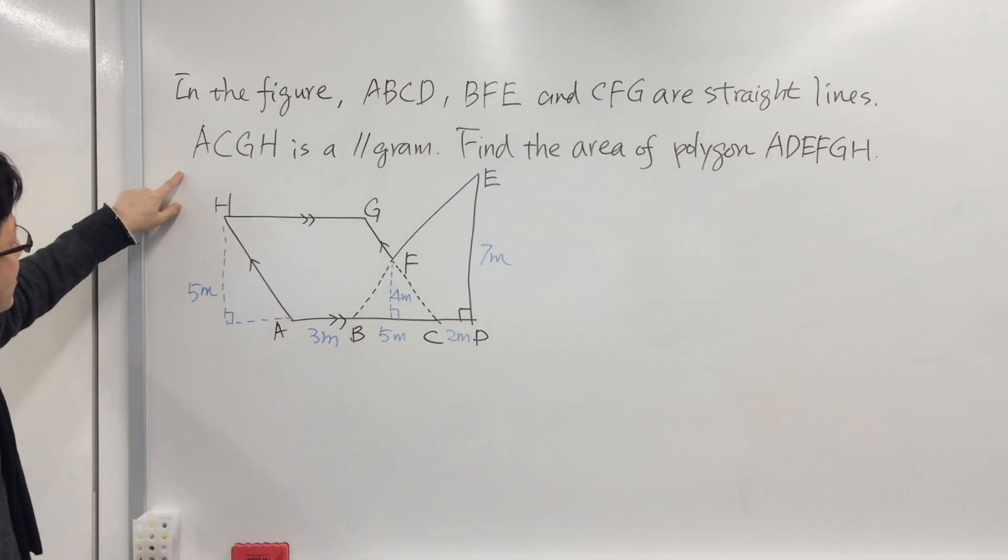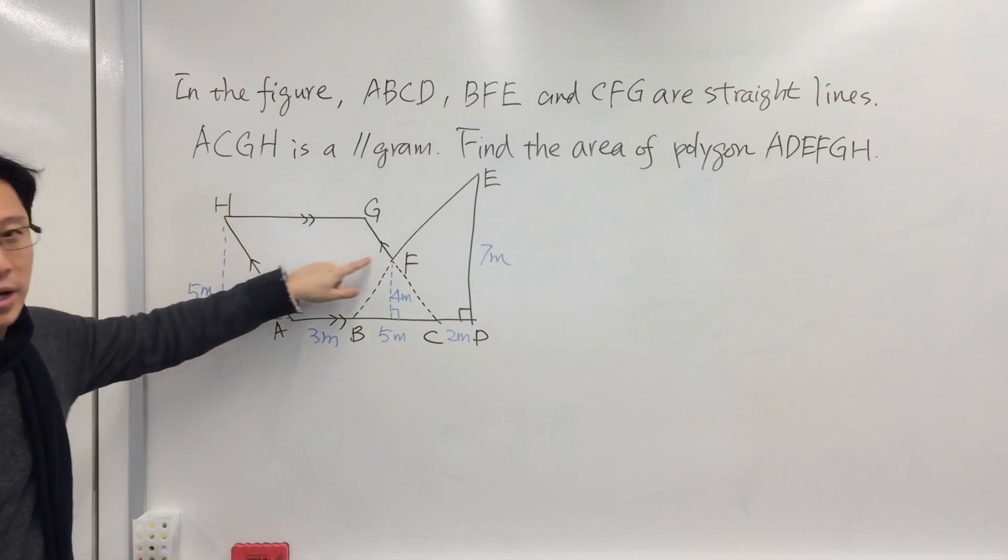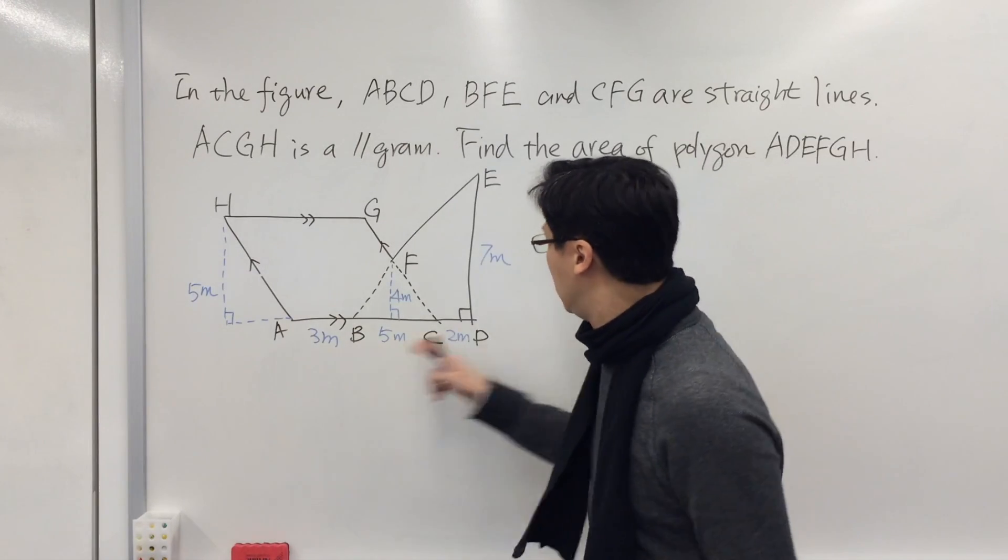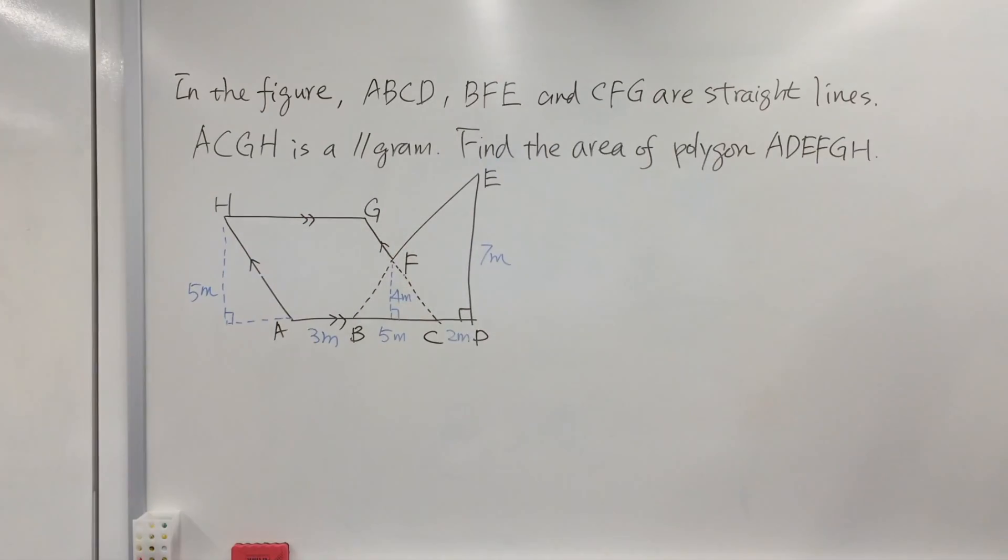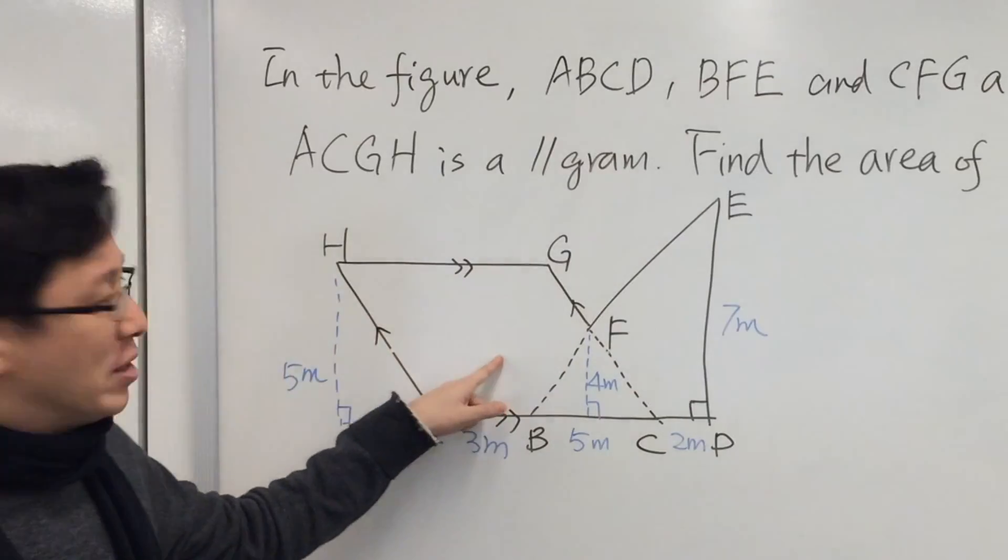ACGH is a parallelogram with opposite sides parallel. Now we're going to find the area of polygon ADEFGH. We can see from this polygon that it is actually the sum of the areas of this parallelogram and triangle BDE.